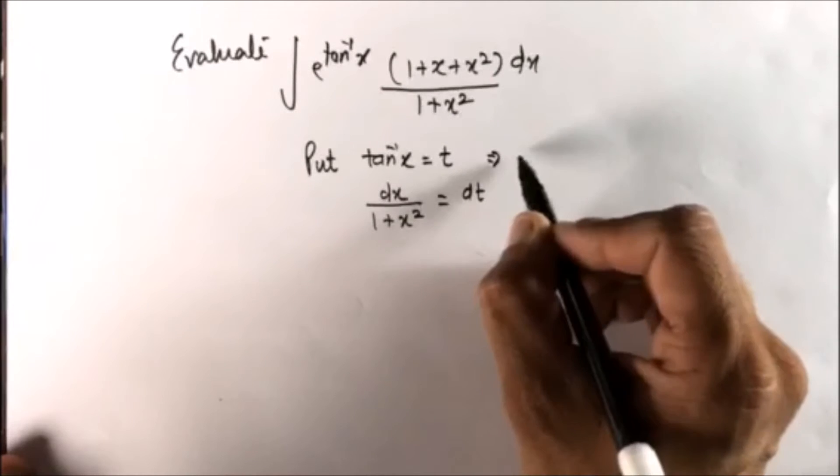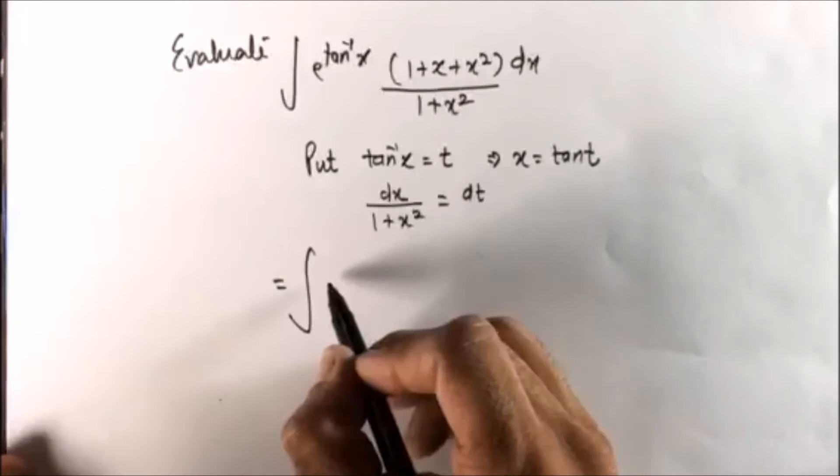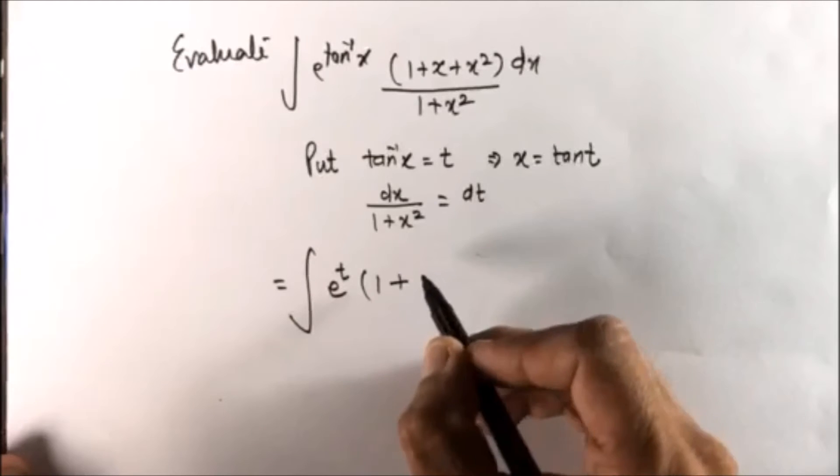Now what is x? x is tan t. So now with these terms we substitute and this becomes e to the power t. 1 remains as it is.